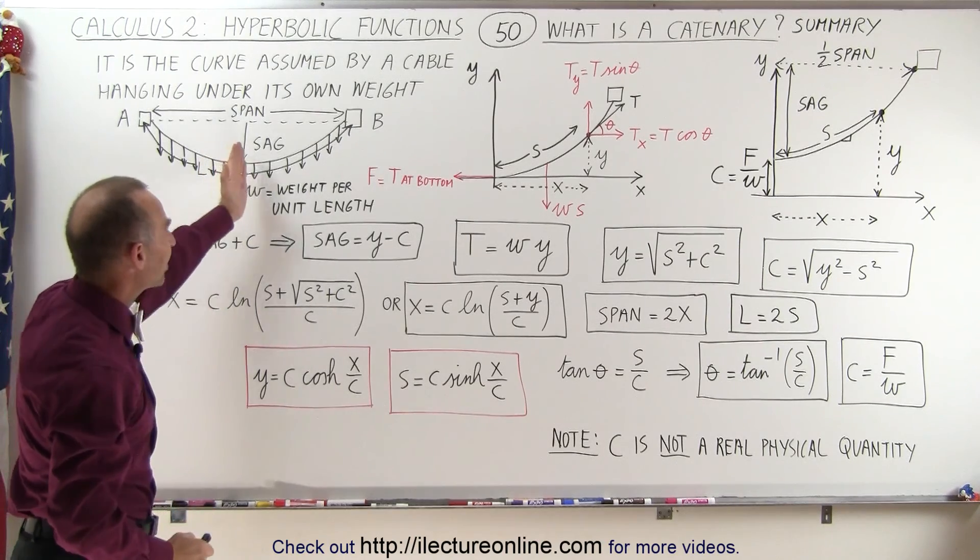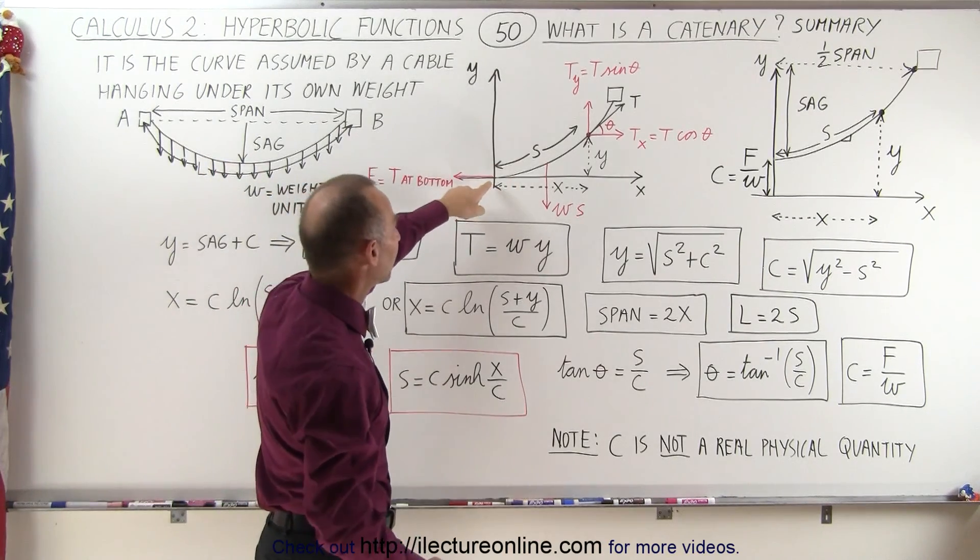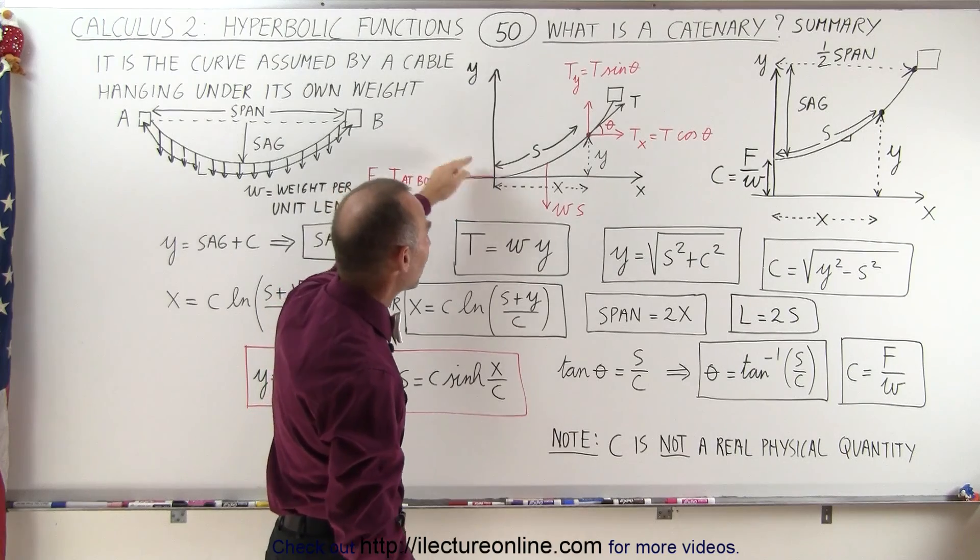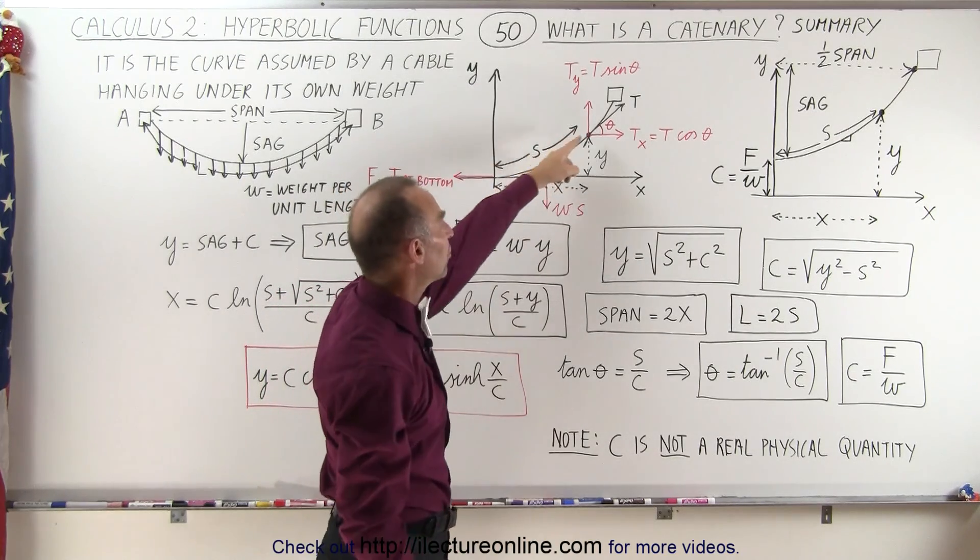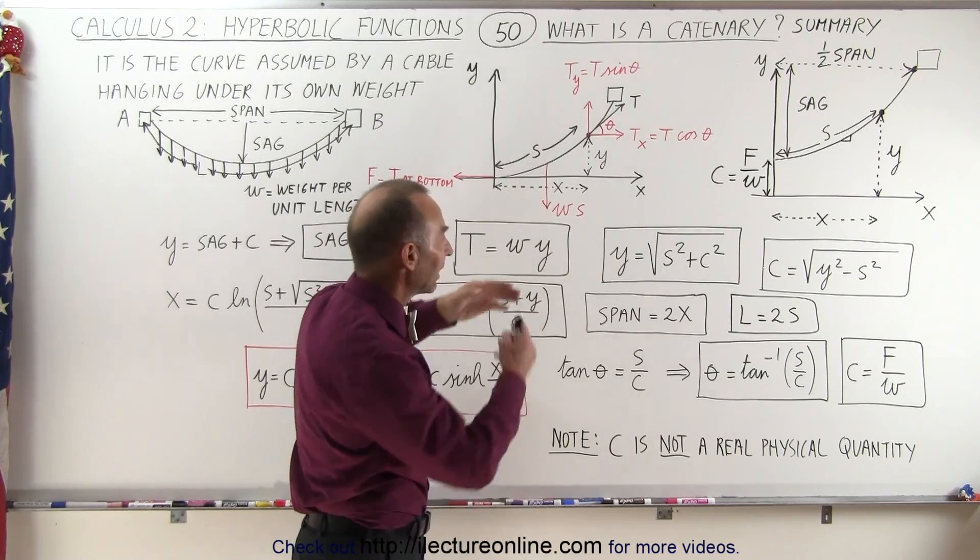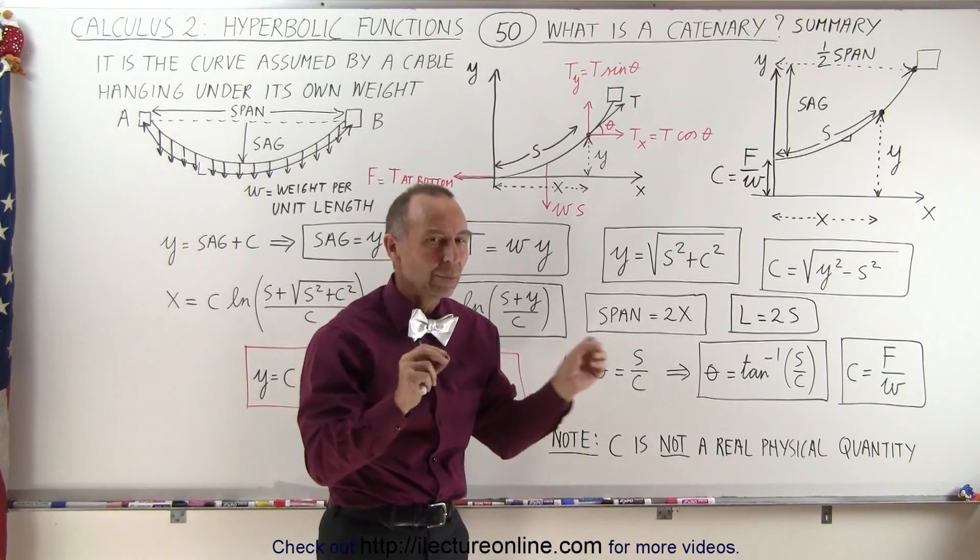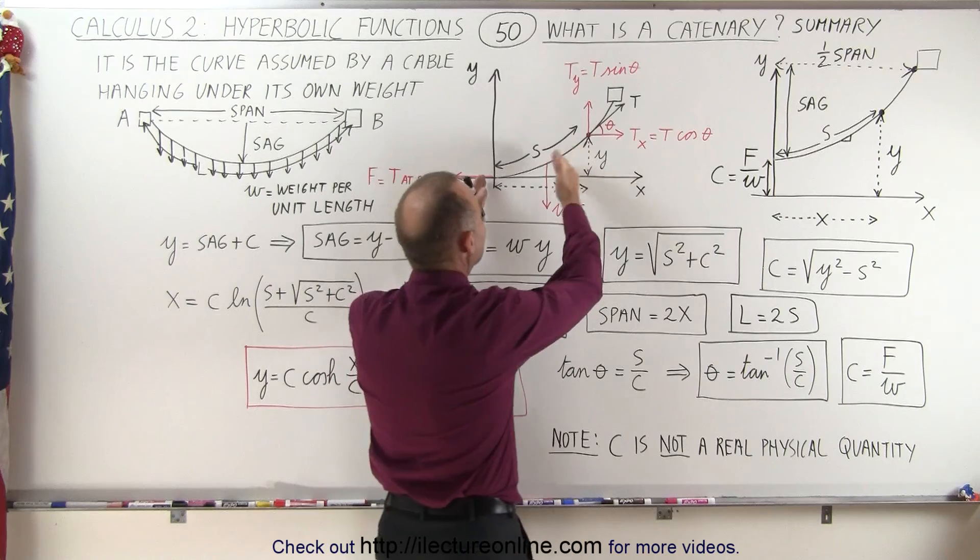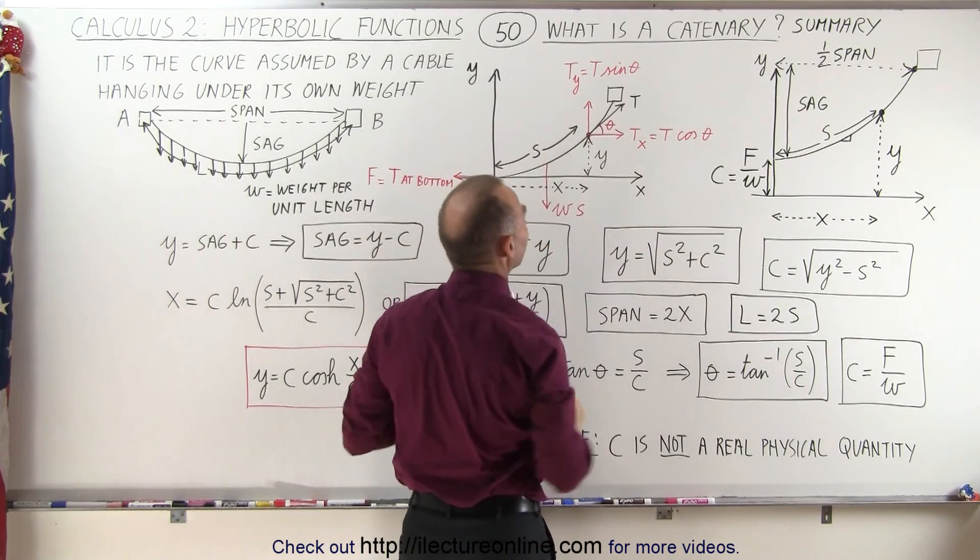Now notice that if we take half the cable and put it on the xy-axis with the bottom of the cable at the origin, we can make some relationship between the tension in the cable, the tension at the bottom of the cable, and the weight per unit length times the length of the cable, and we can relate those to one another for any section or any point on the cable.